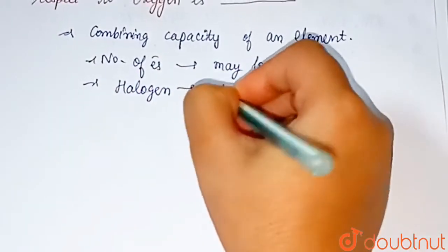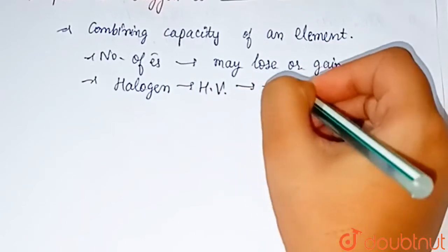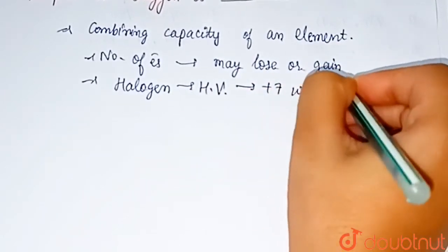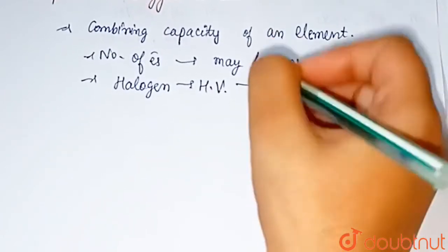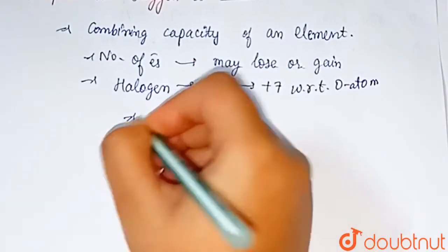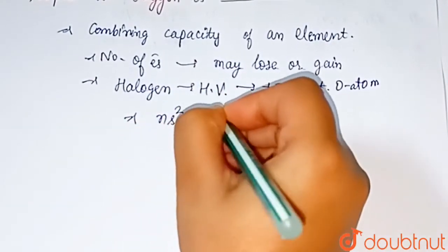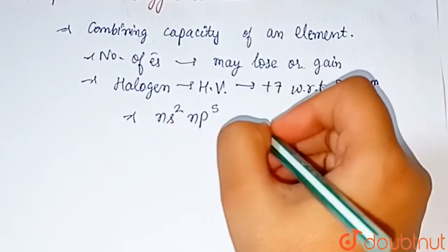Halogens show highest valency of plus seven with respect to oxygen atom. The general electronic configuration of halogen is ns2 np5. Oxygen is more electronegative...